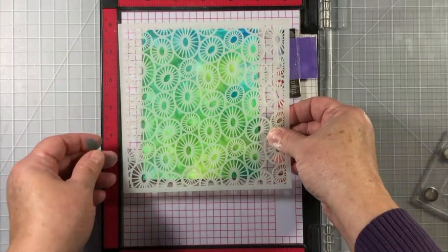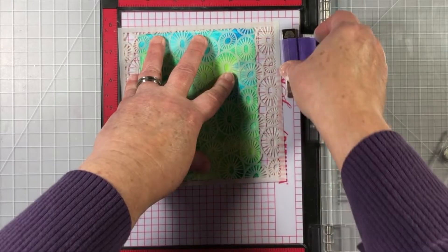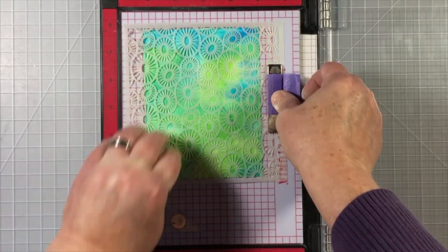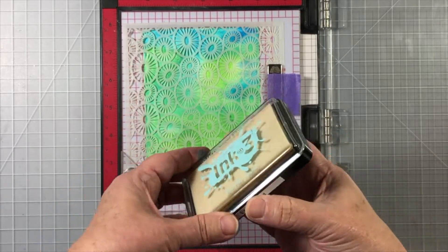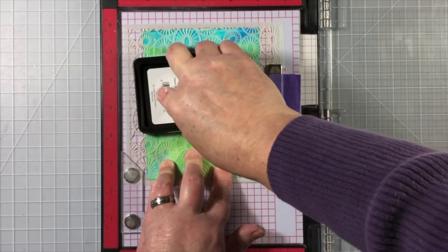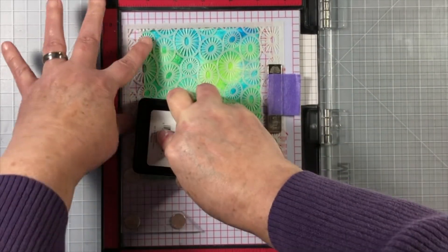Now I'm going to place this piece of watercolor paper on my MISTI and I'm going to use my MISTI pieces to hold it all together. I don't do this as often as I should. Sometimes I use just a piece of tape on my workspace, but the MISTI works great for all sorts of different uses.